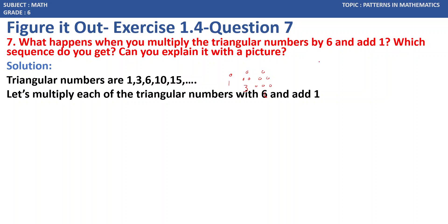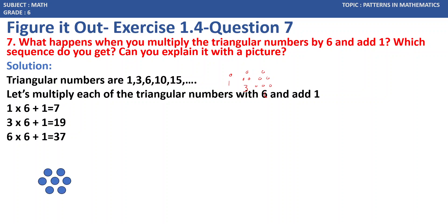We multiply each triangular number by 6 and add 1. So 1 times 6 plus 1 equals 7. Then 3 times 6 plus 1 equals 19. Then 6 times 6 plus 1 equals 37. Can we represent 7 in a hexagonal form? Counting the dots: 1, 2, 3, 4, 5, 6, 7 — yes, this gives 7, the first number.